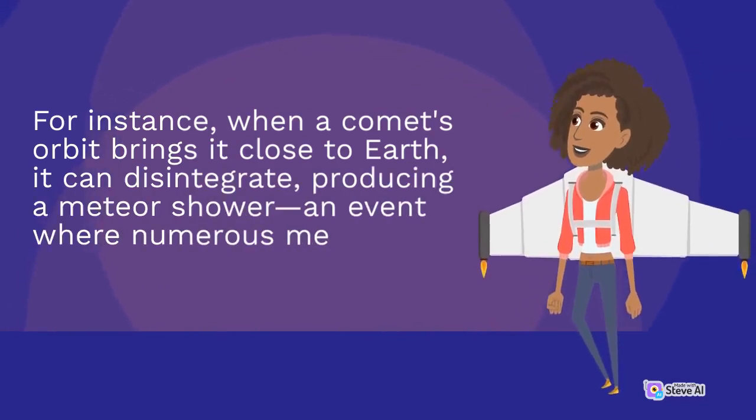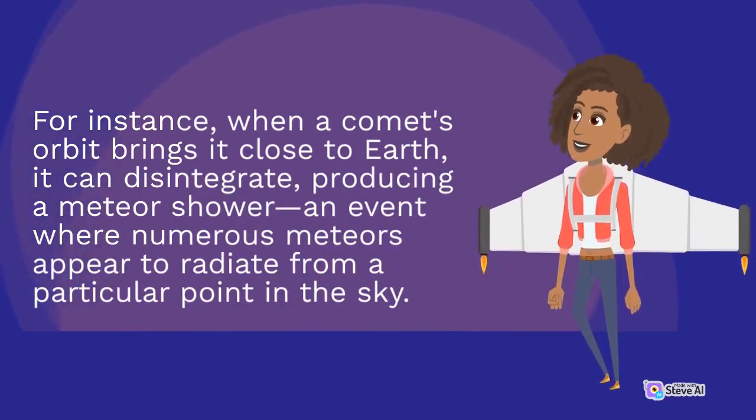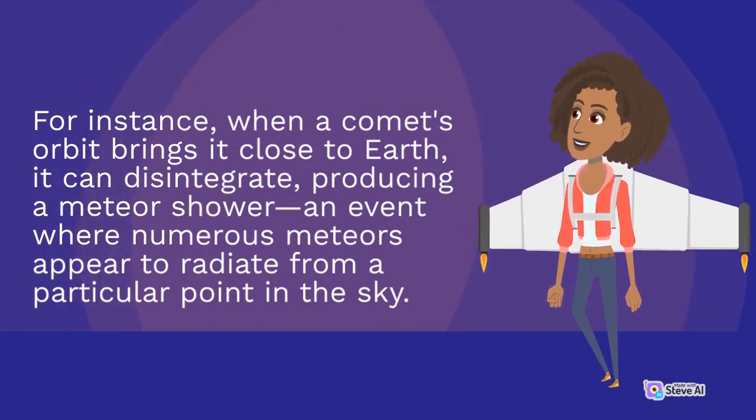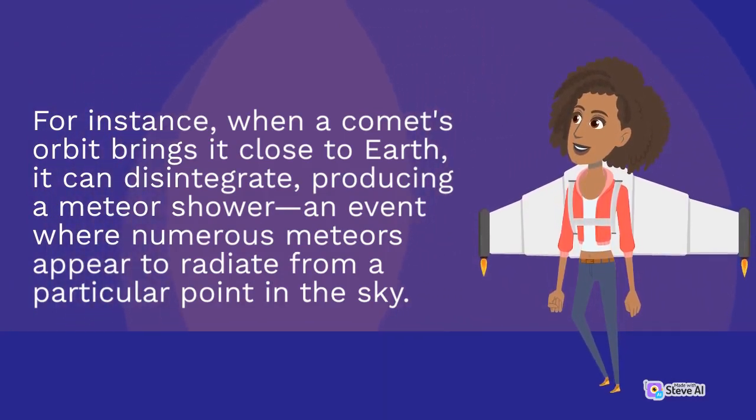For instance, when a comet's orbit brings it close to Earth, it can disintegrate, producing a meteor shower, an event where numerous meteors appear to radiate from a particular point in the sky.